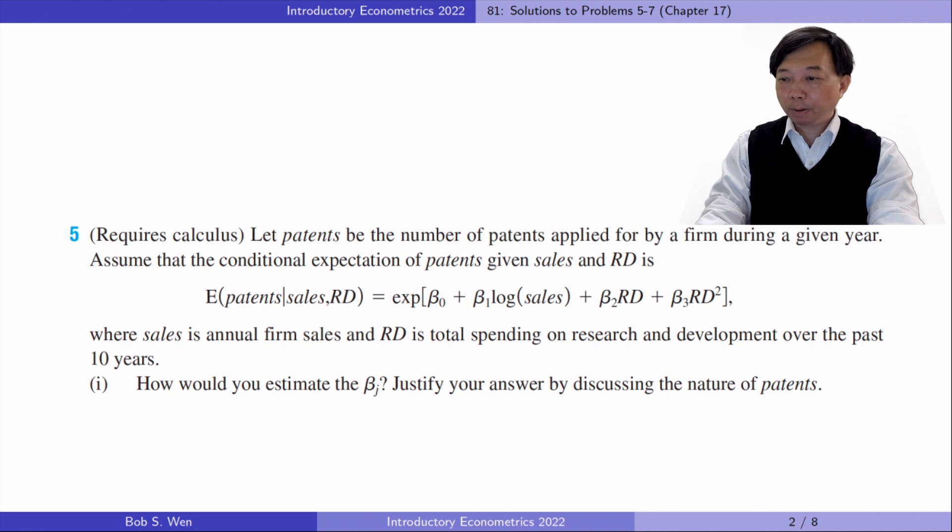Let's find answers to problem 5. Let patents be the number of patents applied for by a firm during a given year. Assume that the conditional expectation of patents given sales and R&D is E[patents|sales,RD] = exp[β₀ + β₁log(sales) + β₂RD + β₃RD²], where sales is annual firm sales and R&D is the total spending on research and development over the past 10 years. In part 1, how would you estimate the betas? Justify your answer by discussing the nature of patents.